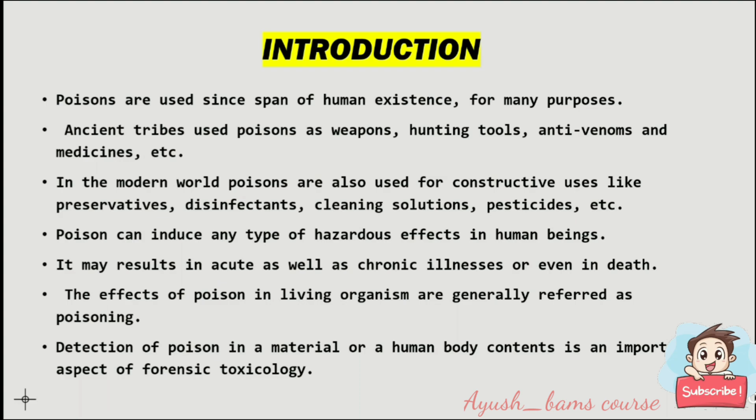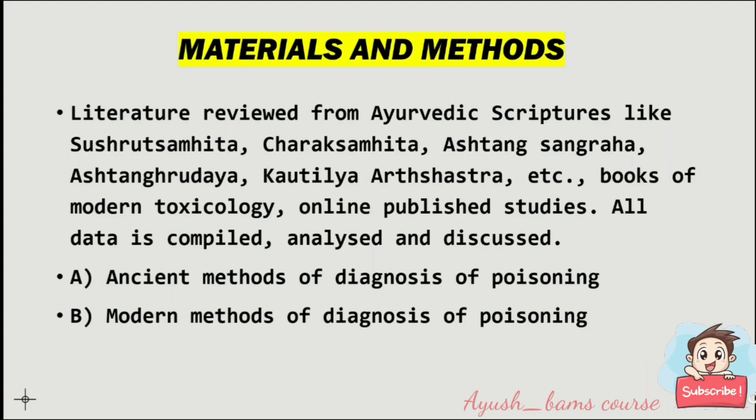Detection of poison in a material or a human body is an important aspect of forensic toxicology. Literature was reviewed from Ayurvedic scriptures like Sushruta Samhita, Charak Samhita, Astanga Sangraha, Astanga Hrudaya, and Kautilya's Arthashastra, as well as books of modern toxicology and online published studies. There are two main methods for diagnosis of poison: the ancient method and the modern method of diagnosis of poisoning.